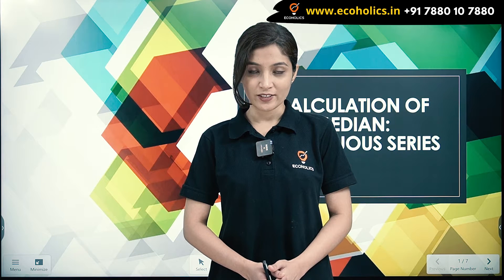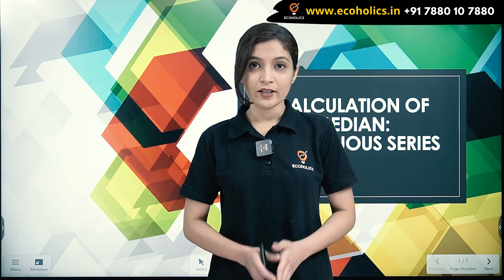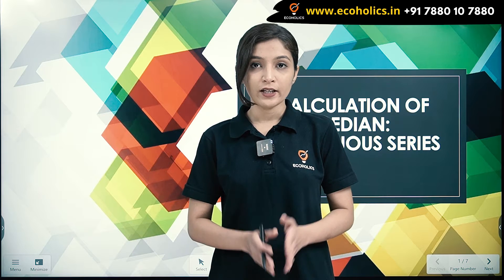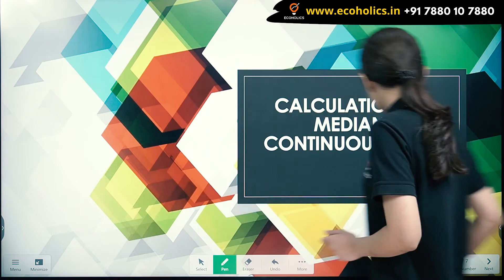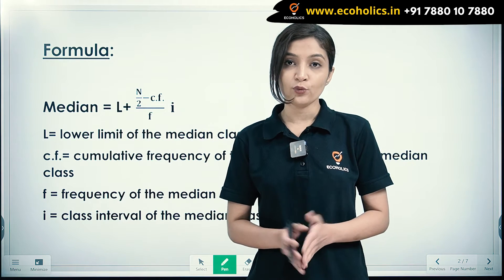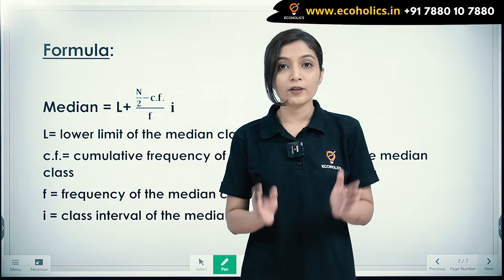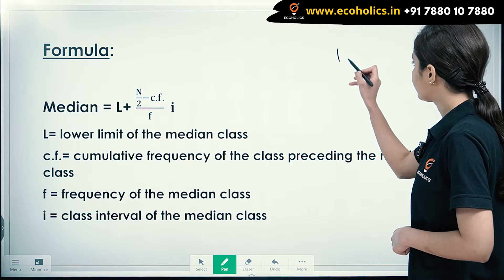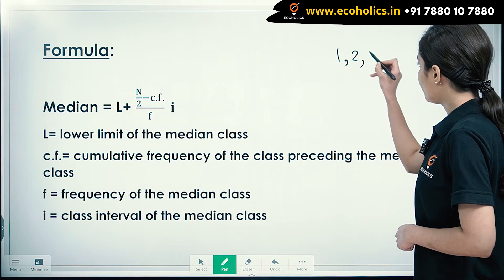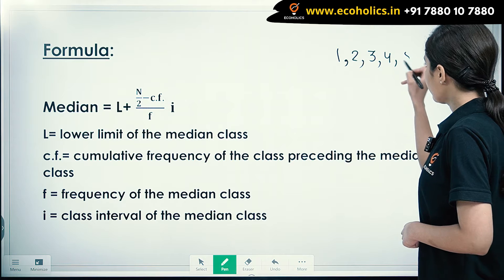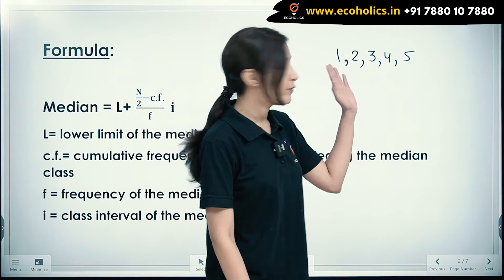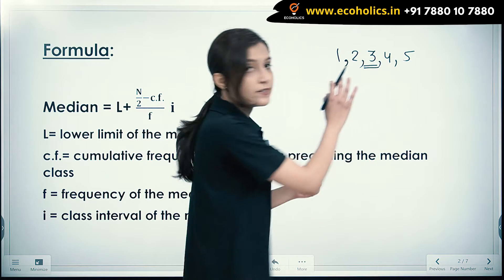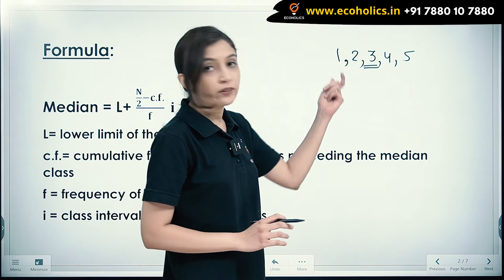Hello everyone, welcome to Echoholics. In our previous videos, we have discussed calculation of median in case of discrete series and individual observations. In this video, we will be discussing calculation of median in case of continuous series. Median is basically the middlemost value from a given set of observations. For example, in the set 1, 2, 3, 4, 5, we can see that 3 is our middlemost value and therefore 3 becomes our median.